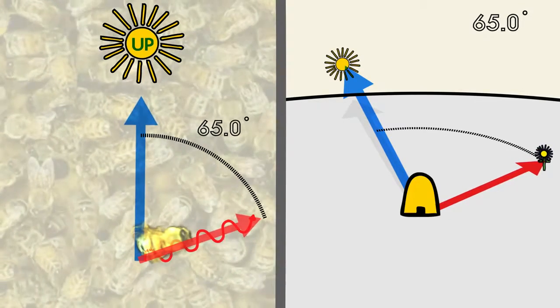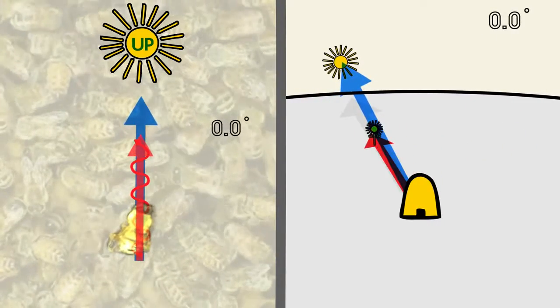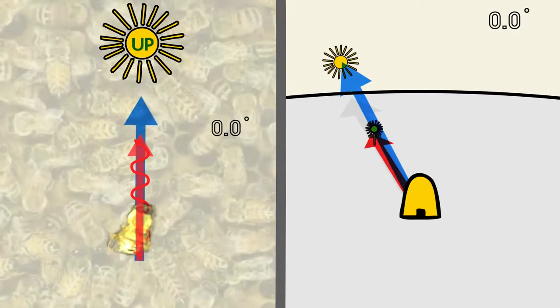So if the bee dances directly upward, other bees know that they can find flowers by flying directly towards the sun.